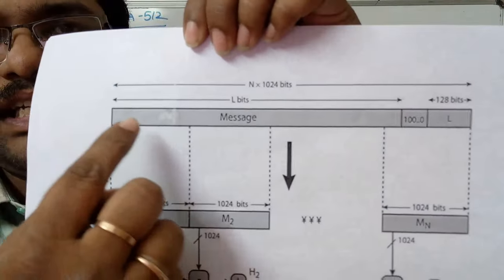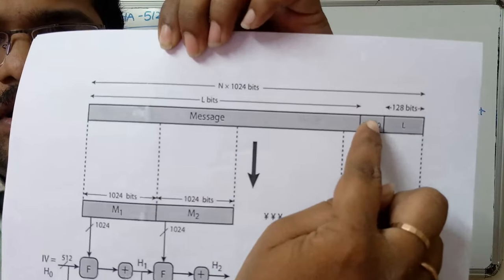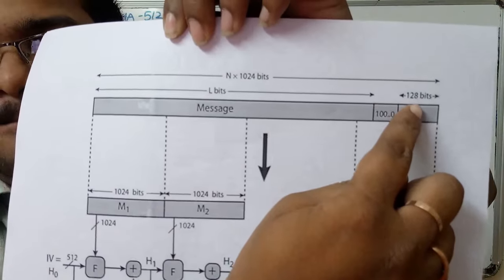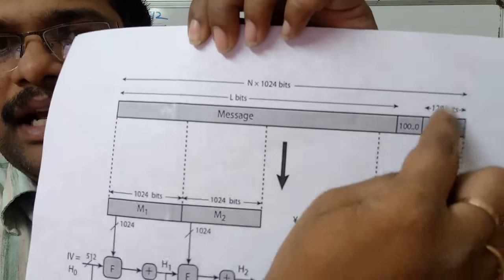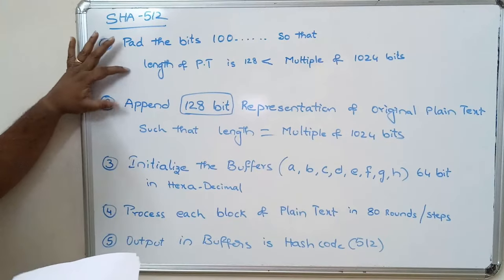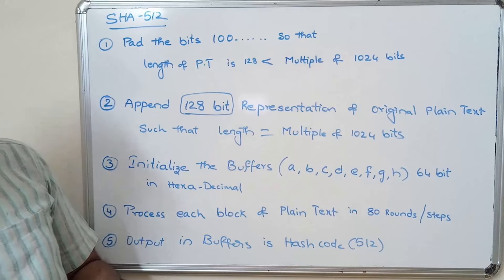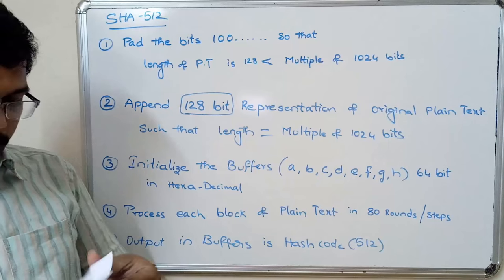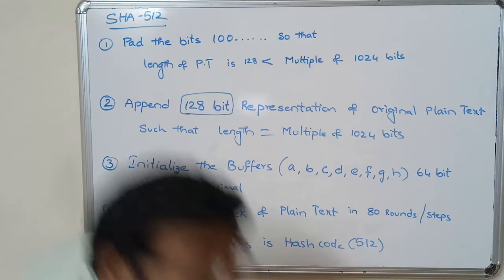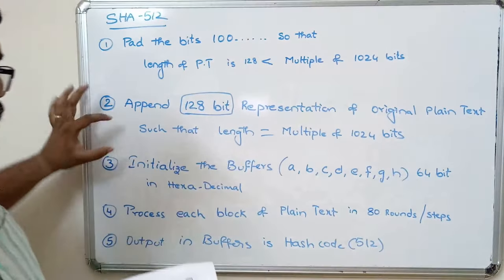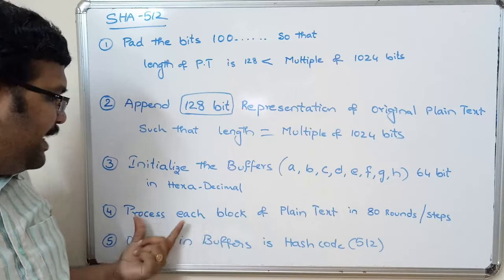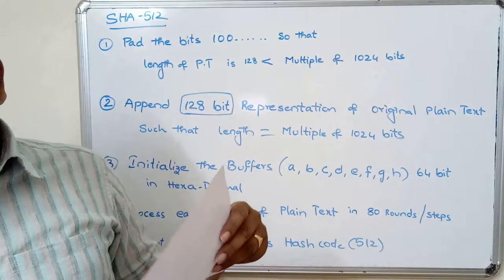To summarize the first two steps: append 1 followed by zeros so the length is a multiple of 1024 minus 128, then append the 128-bit representation so the length becomes a multiple of 1024. After these two steps, initialize the buffers. The buffers A, B, C, D, E, F, G, H — total 8 buffers of 64 bits each — are initialized in hexadecimal. Each block is then processed in 80 rounds in the round function.